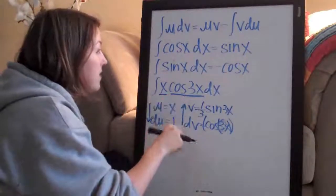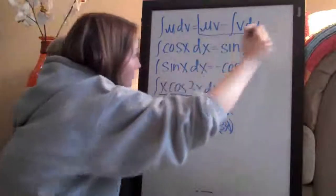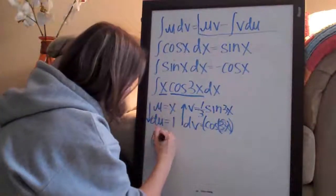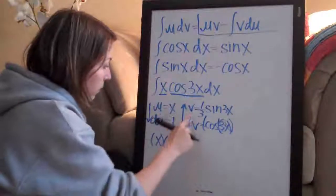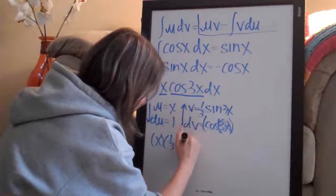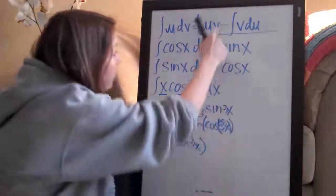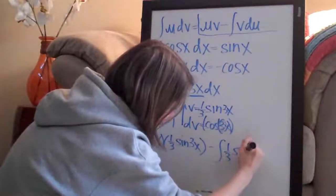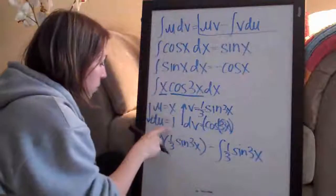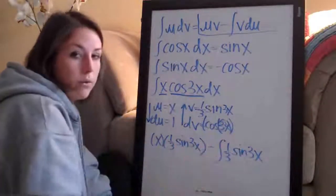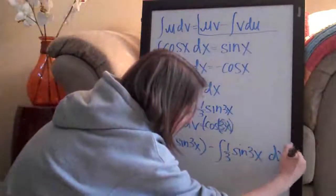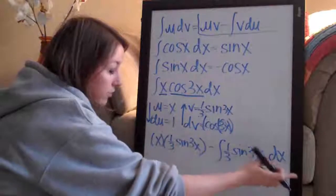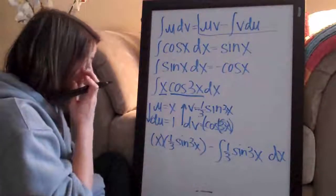Now we have u, du, v, and dv and we can plug those into the formula. Going term by term: the first term is u times v, which is x times (1/3)sin(3x). Then we subtract the integral of v du, which is the integral of (1/3)sin(3x) times 1 dx — we don't need to write the 1, it just disappears — and we write dx because that's part of the integral notation.